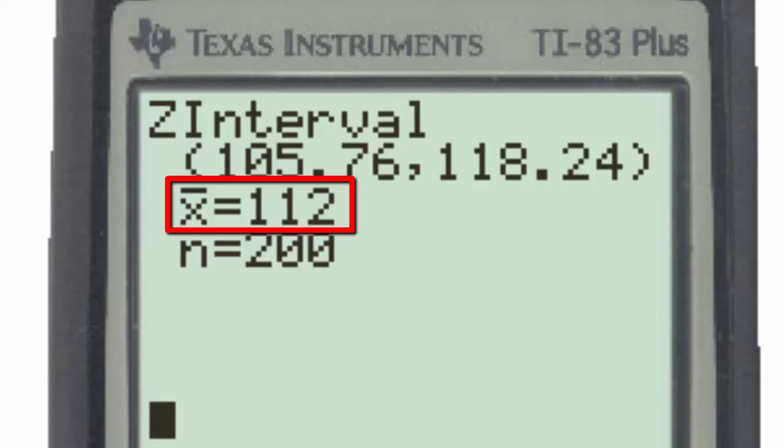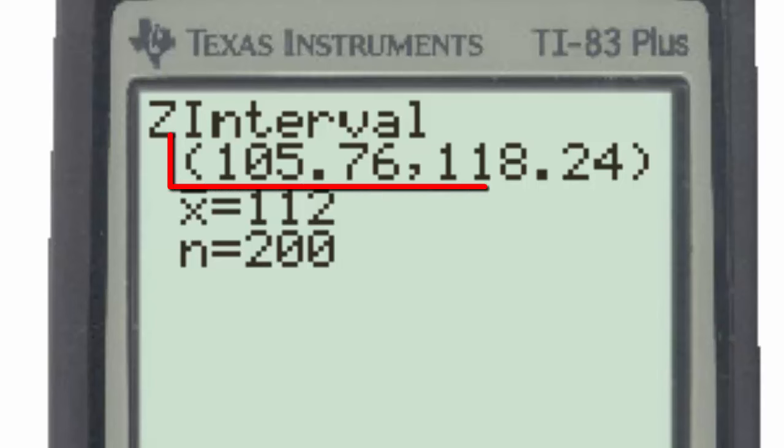random sample of 220-year-olds. The interval notation with the decimals rounded to the hundredths place is exactly the interval that is given by the TI-83.